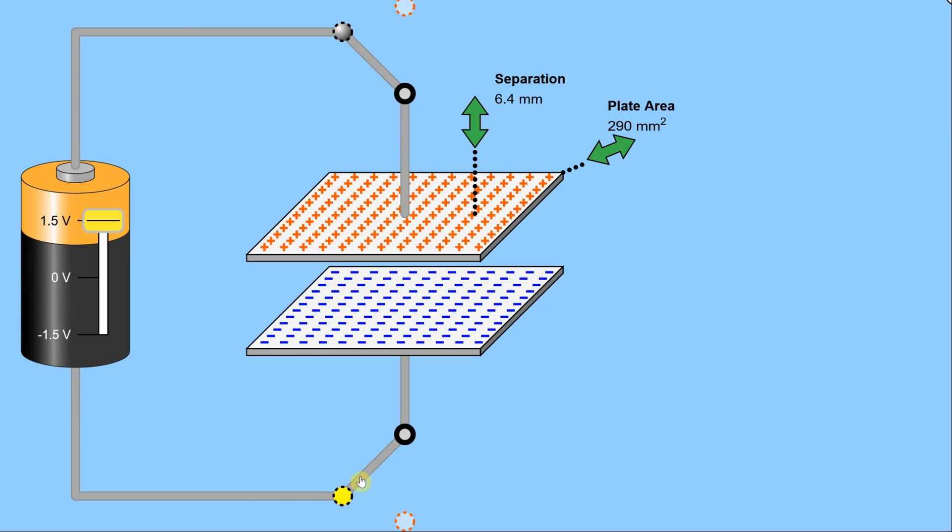And now look what happens when I open the switch. Those charges stay on the plates. They don't disappear. They don't go anywhere. And so what we can see from this animated experiment is when you have a pair of conductors like these two plates that are separated by an insulator, this air gap in between them, that pair of conductors has the capacity to store charge. And this ability to store charge is called capacitance.